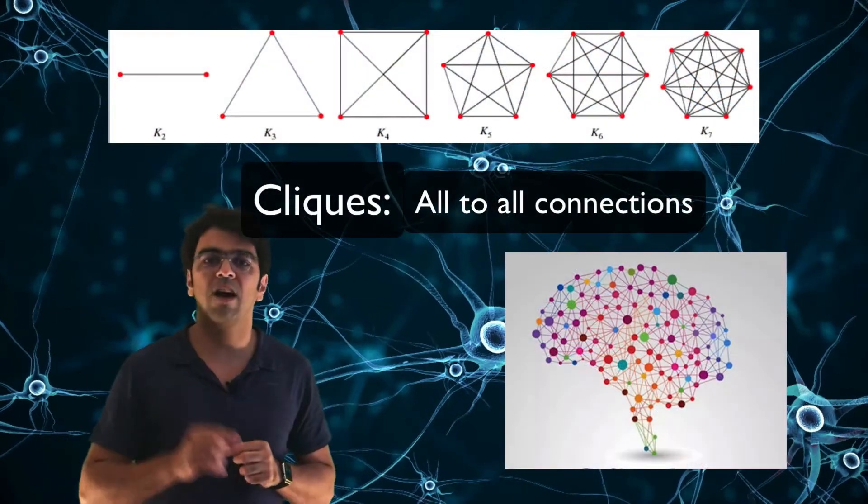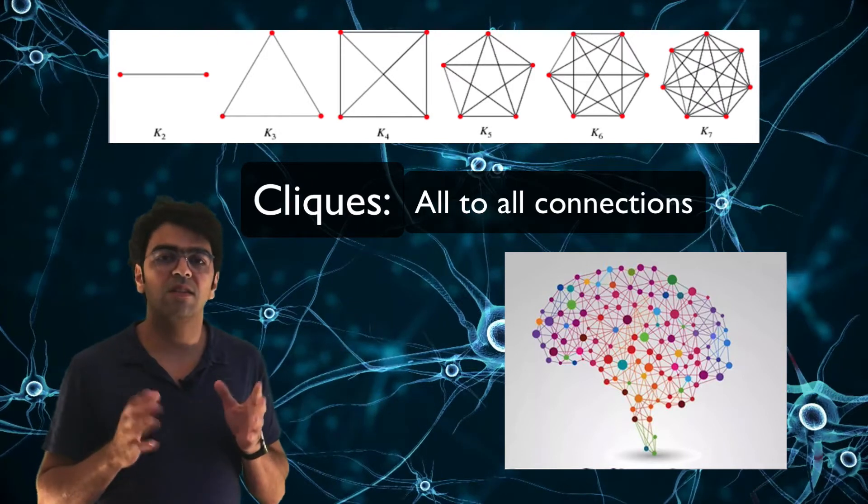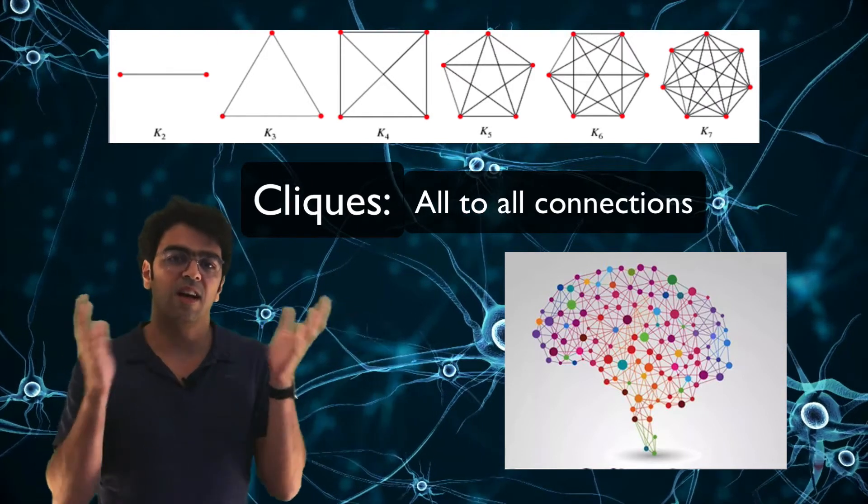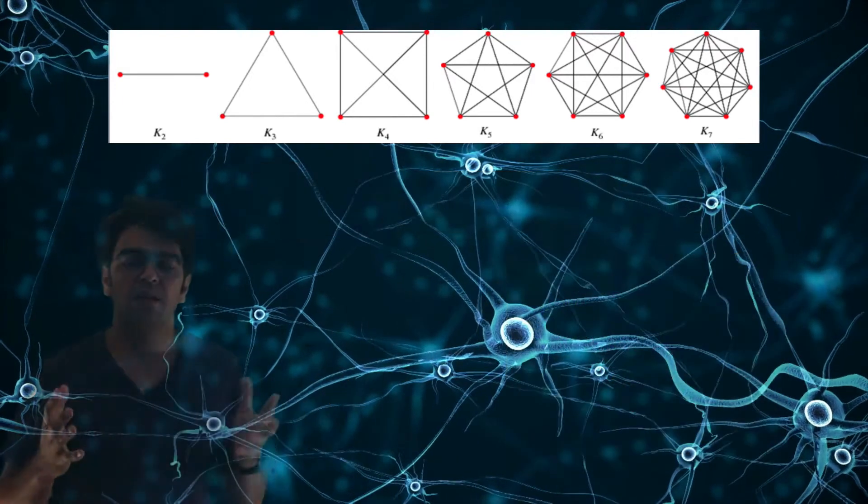So instead of only counting the links of a network, we can also count the edges, the triangles, the tetrahedra, and all the cliques of a network.